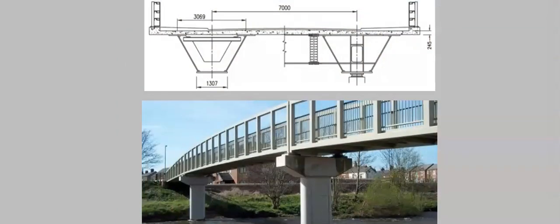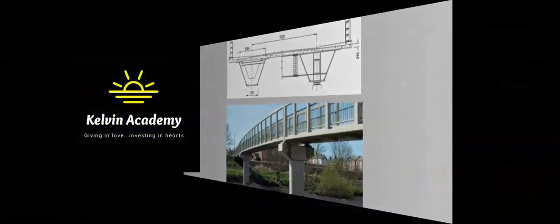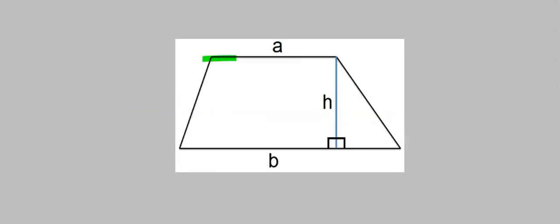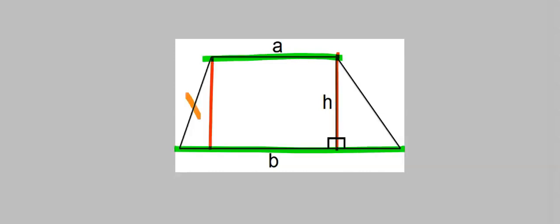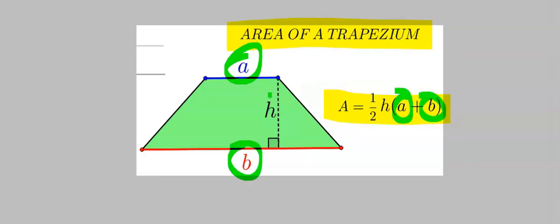Trapezoidal box girders allow for certain design and construction. To calculate the area of a trapezium, we are concerned with the two parallel sides and the height. In the formula for calculating the area, we only need the two parallel sides and the height.